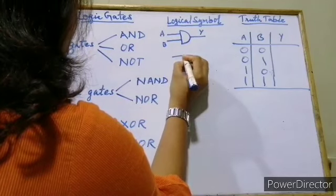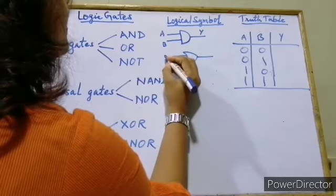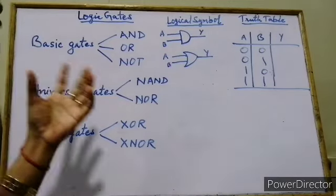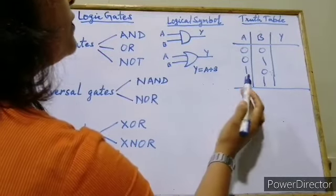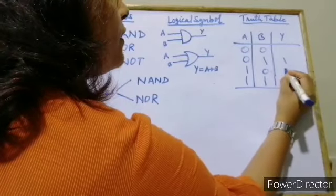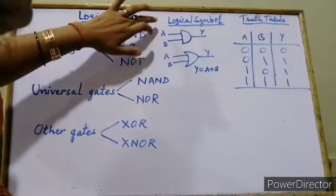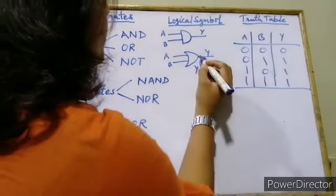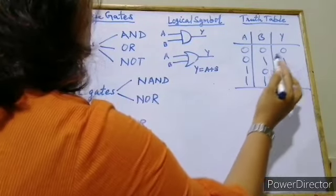Our next basic gate is the OR gate. This is the symbol of OR gate. Again we take inputs A and B and one output Y. It acts as the logical OR operator, so Y is equal to A plus B. It will be true when any one of the inputs is true: 0+1=1, 1+0=1, 1+1=1. But if both are false then it will be false. So in case of the OR gate, output will be false only if both the inputs are false; otherwise it will be true.